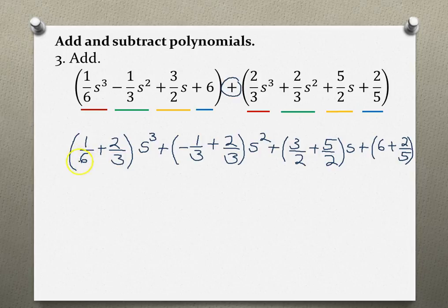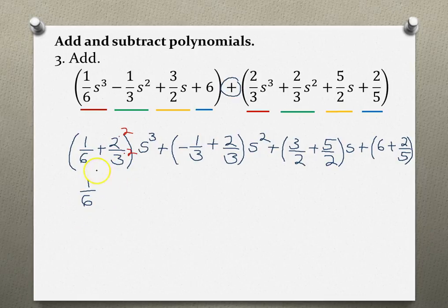Because this is already 6, we leave it as is, but this one we multiply numerator and denominator by 2. This gives us 2×2=4, and 3×2=6.